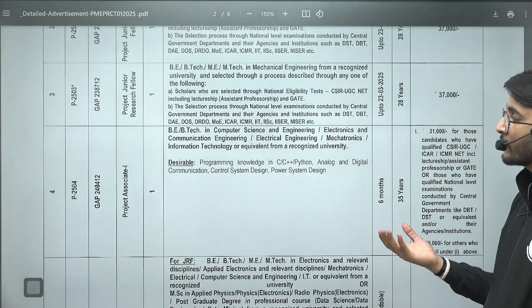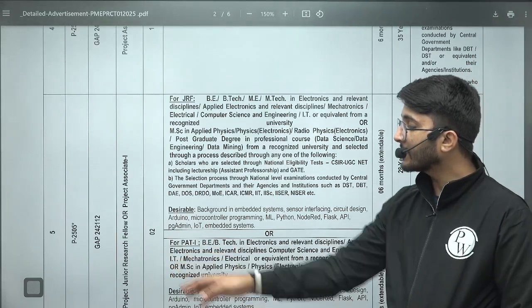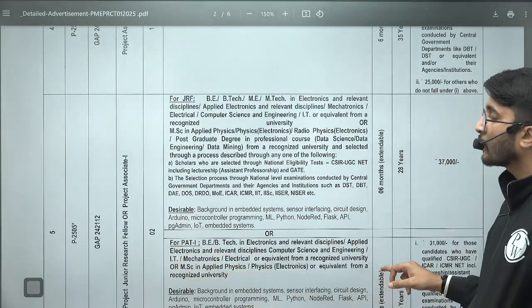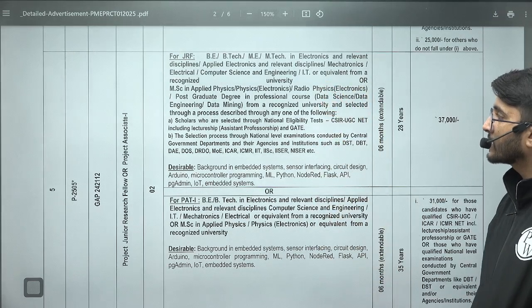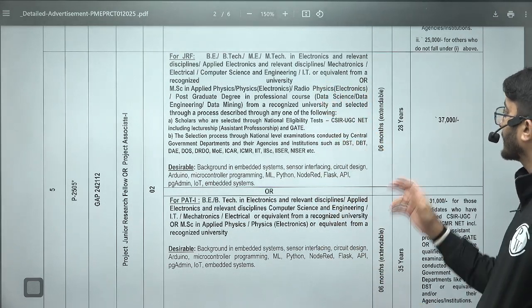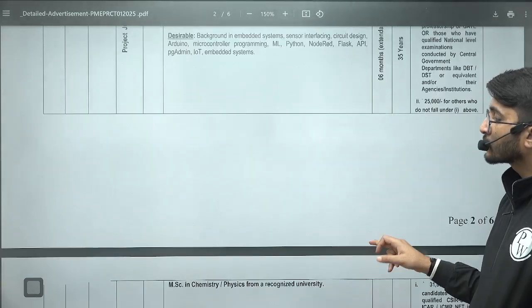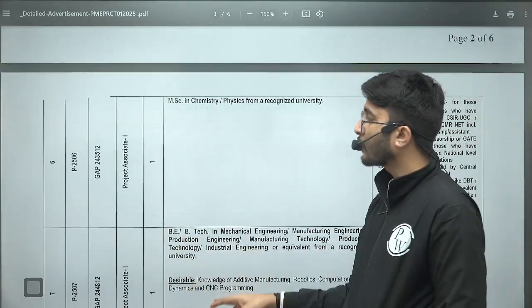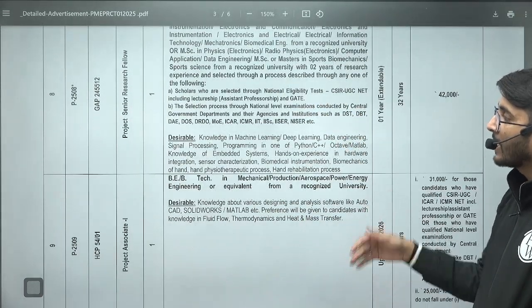Similarly, Project Junior Research Fellow or Project Associate vacancies are also there. BE/BTech are required for JRF and GATE scorecard validity is required with 37,000 rupees stipend. There are multiple different projects going on and accordingly there are different qualifications mentioned for different branches. Multiple different openings are there.